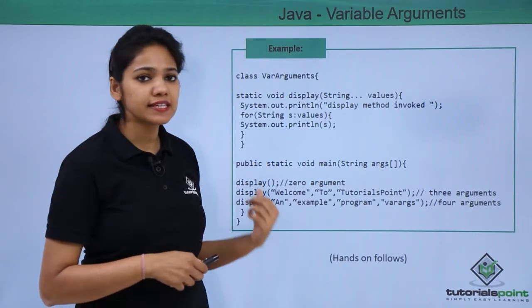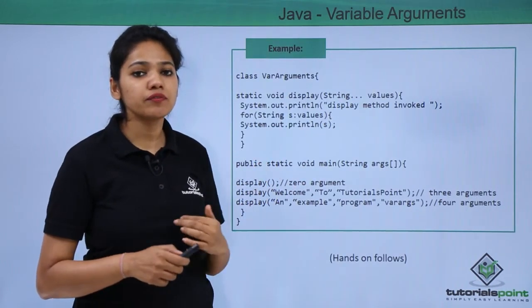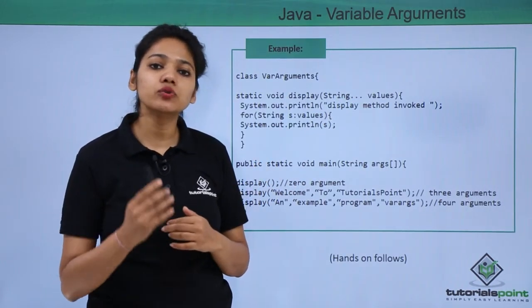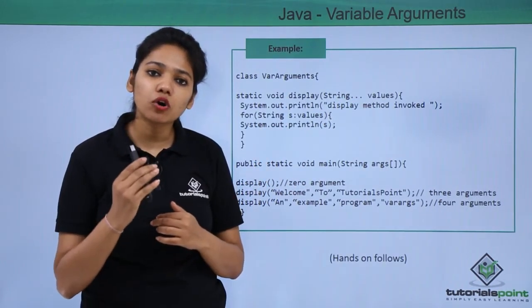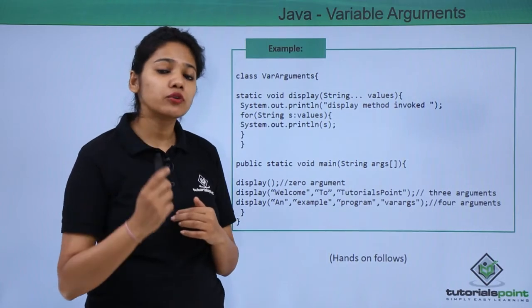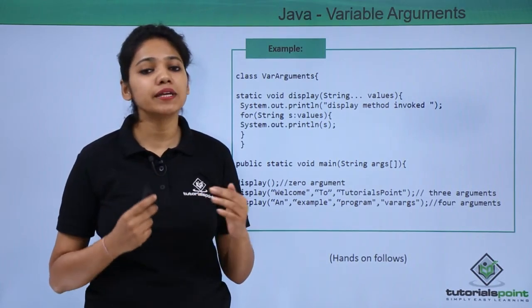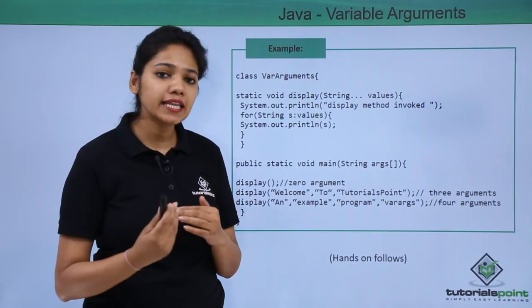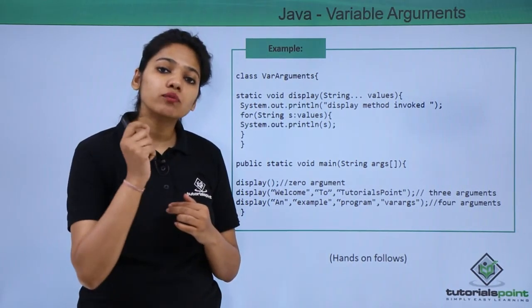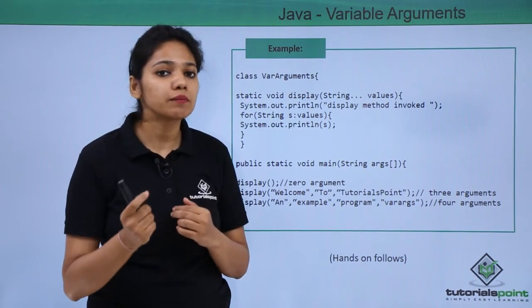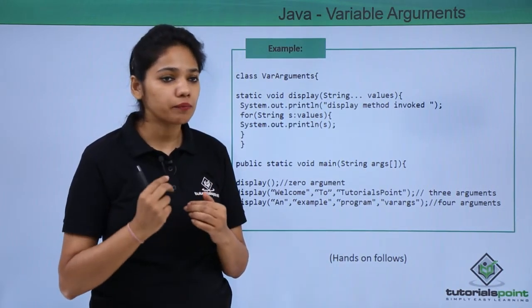So let us see this with the help of an example — how you can use a variable argument where you do not have to redefine the method again and again, and which can accept zero to n number of arguments.